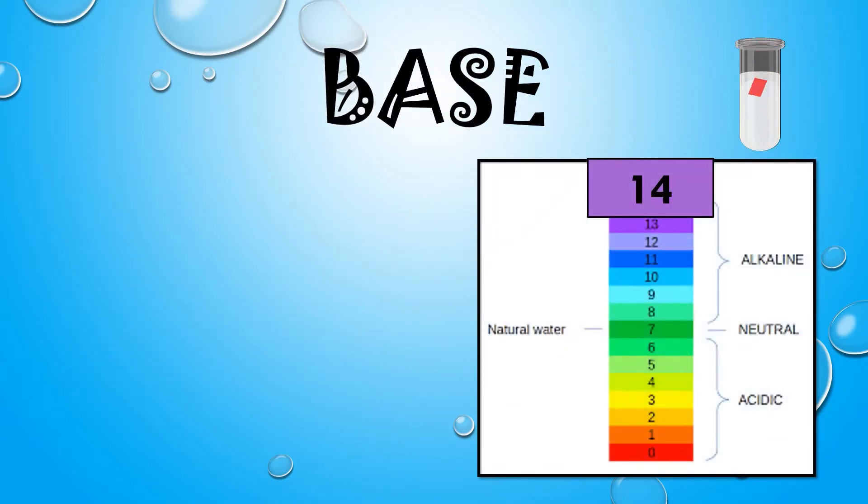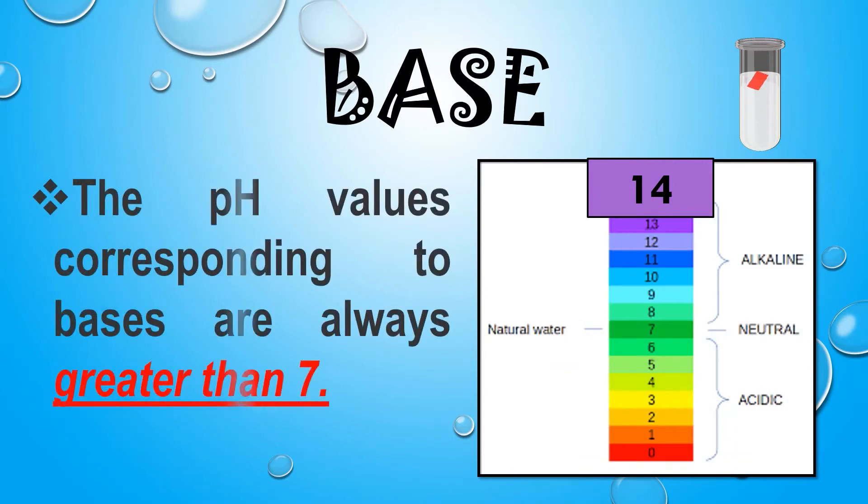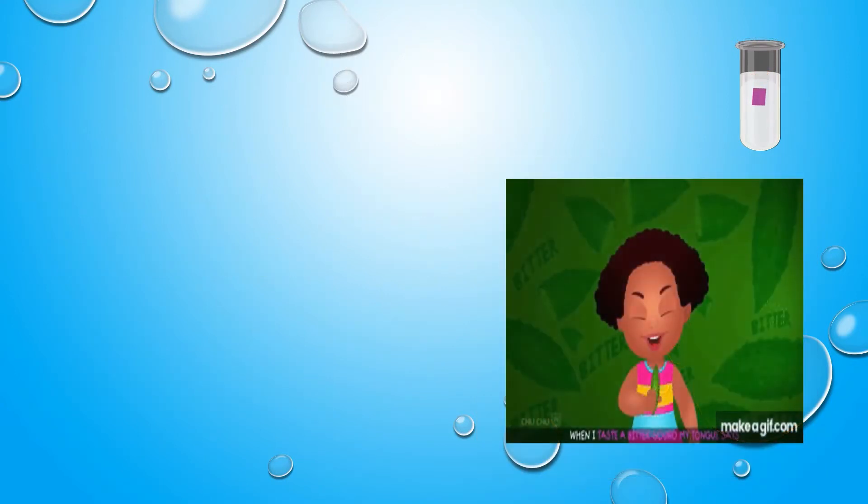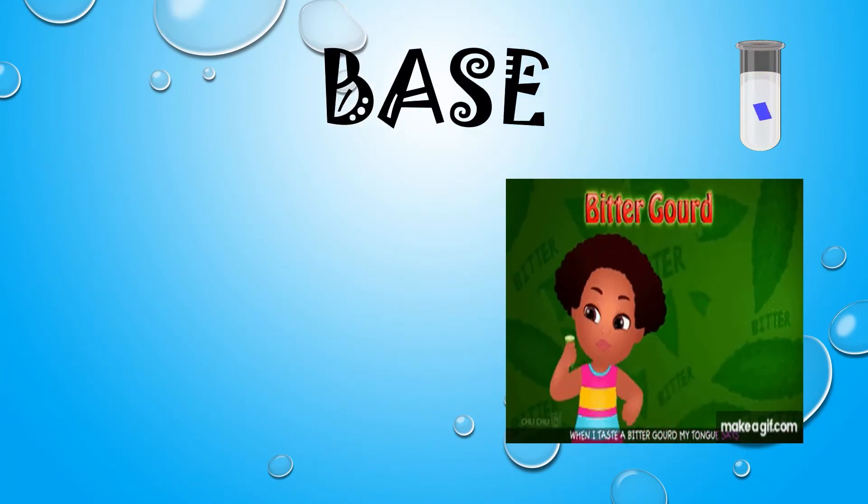The pH level of a basic substance is greater than 7, but always remember that the maximum pH level is 14. Basic substances taste bitter.